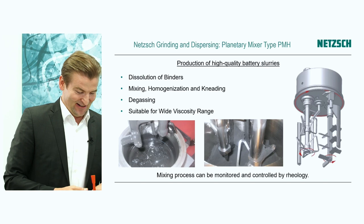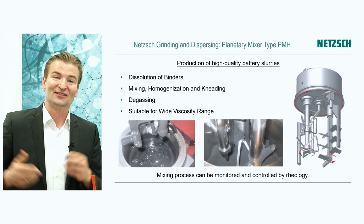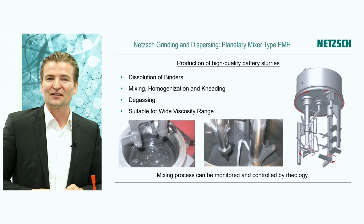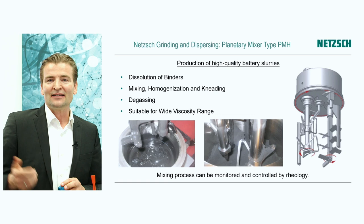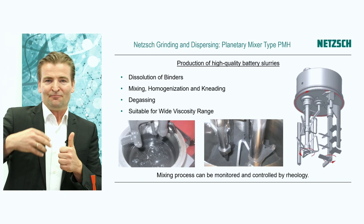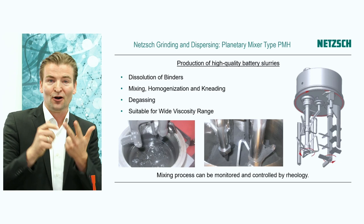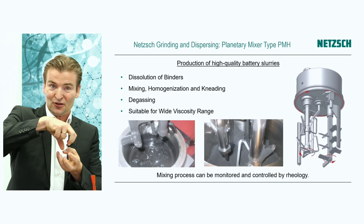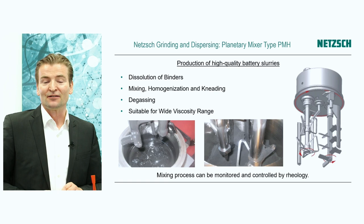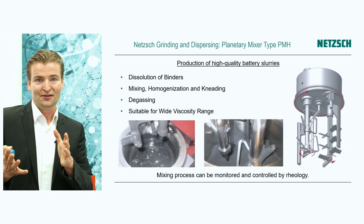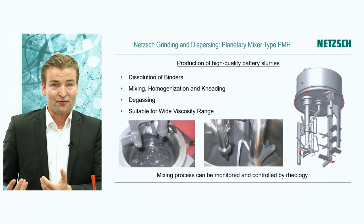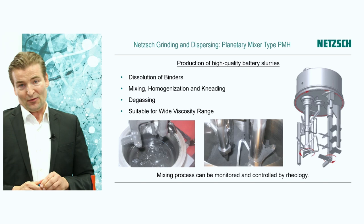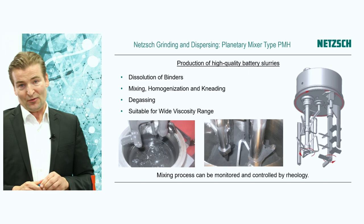Now we know what optimal flow properties a high-quality battery slurry should have. Our colleagues from Netzsch Grinding and Dispersing offer a planetary mixer, the PMH, where you can dissolve the binder in solvent, pre-mix dry powders, homogenize the slurry, and even knead high-viscous paste-like slurries. It can produce under vacuum to avoid air bubble inclusion and is suitable for a very wide range of viscosities. We have a very complementary product range: the analytical and rheology side to characterize flow behavior, and the Grinding and Dispersing side to produce slurry with the needed quality.